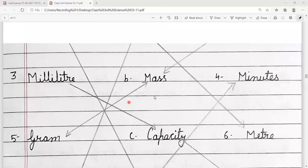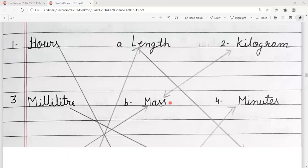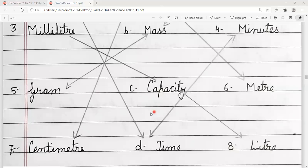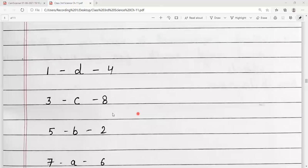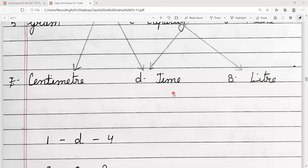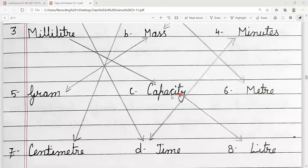Next hai hamara kilogram. Kilogram kis se match kar raha hai? Hamara gram se match kar raha hai. Aur, woh match kar raha hai, hamara five number se. Five number means, hamara hai gram. Aur, hamara uske saath hai B. B option hai. Hamara hai mass.